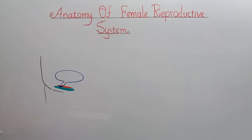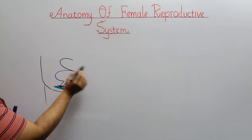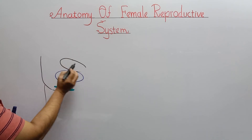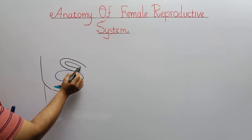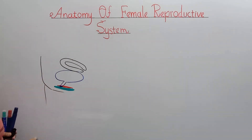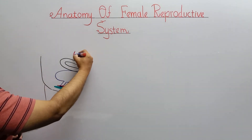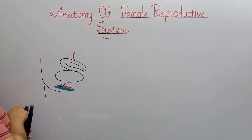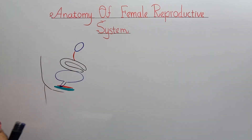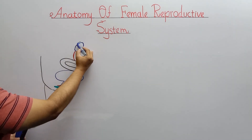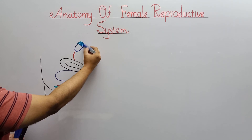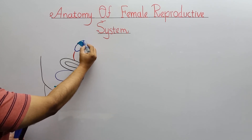Here is the urinary bladder. Behind the urinary bladder there is a very important structure situated upward and behind it — it is a sac-like structure with an opening called the cervix. This is the uterus. Here is a ligament, and above the ligament there is the ovary. The ovary is about three to five centimeters long and two to three centimeters wide.